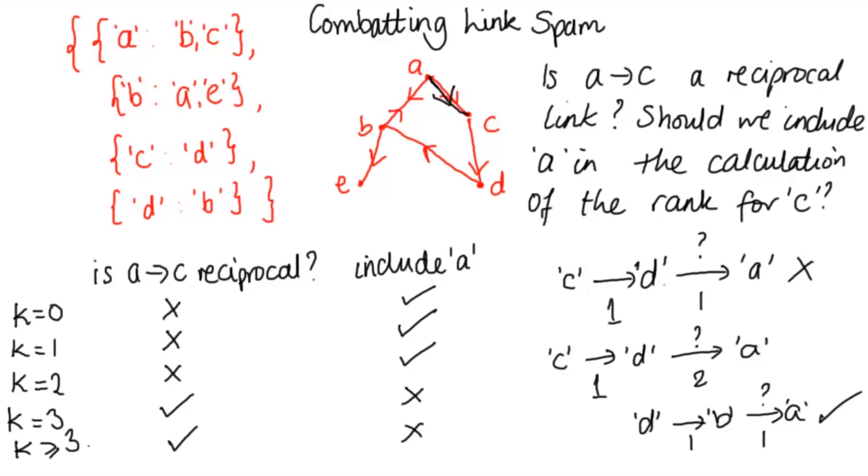And so now we're going to code that. We're going to code a procedure to check whether AC is reciprocal and then we're going to edit the code in ComputeRanks to take that into consideration.